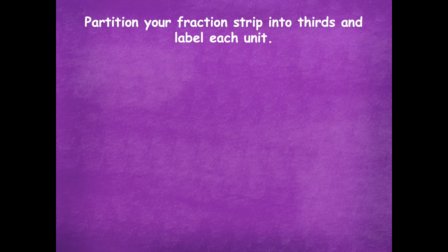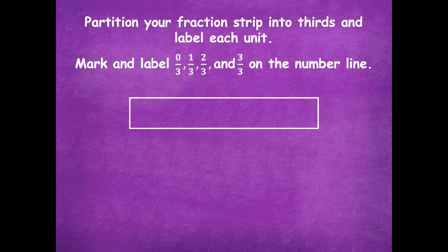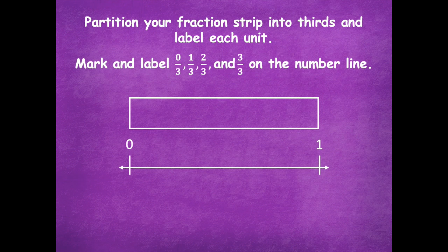Now draw a fraction strip and partition it into thirds and label each unit. We're going to mark and label zero thirds, one third, two thirds, and three thirds on the number line. Draw your fraction strip, draw your number line, partition it into thirds, then label all four of those fractions on your number line. Pause, do that, then click play when you're ready to go over it together.